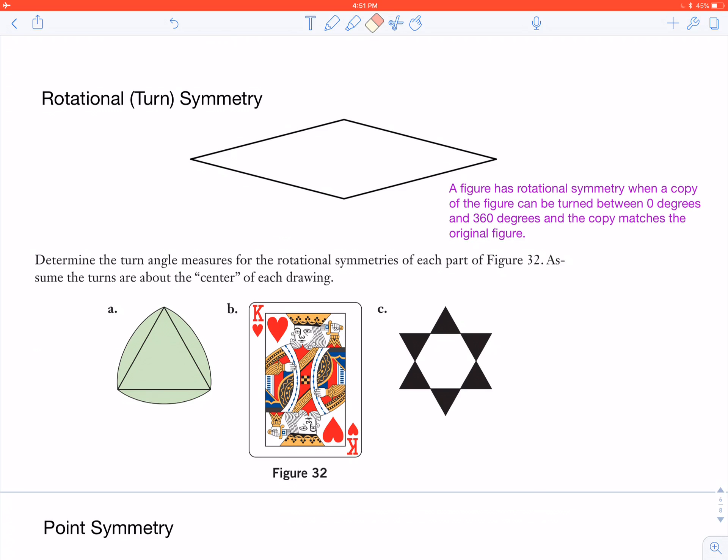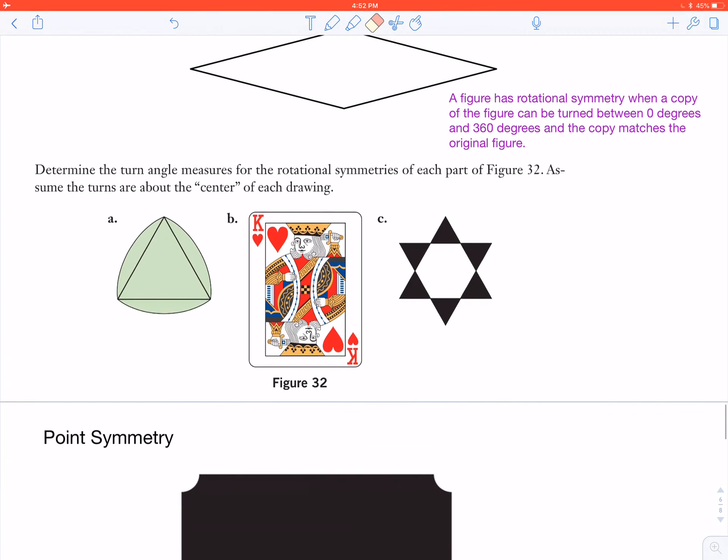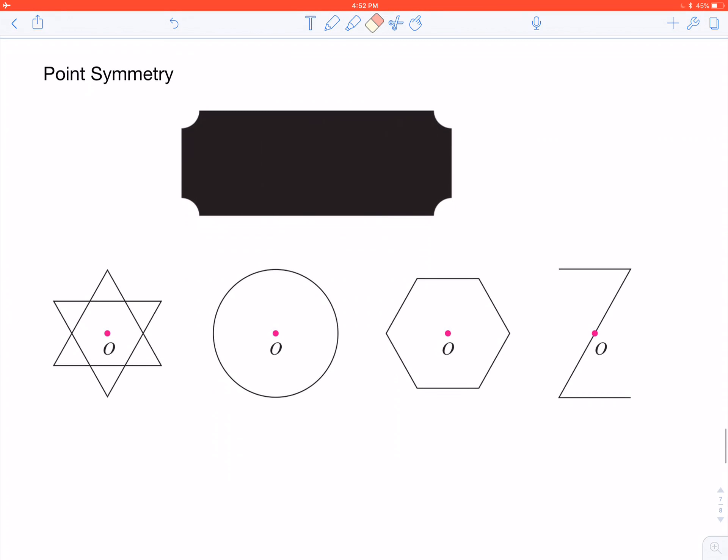The last symmetry that we have is point symmetry. Point symmetry is going to have exactly 180 degree turn symmetry. So if I can turn it upside down, then it is point symmetry. Not only is it rotational symmetry, it's also point symmetry.